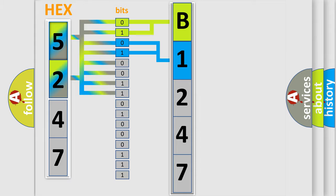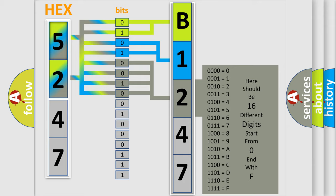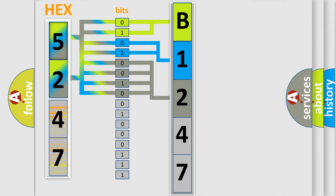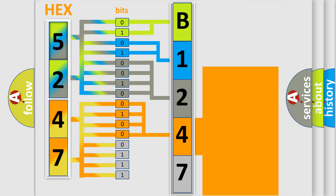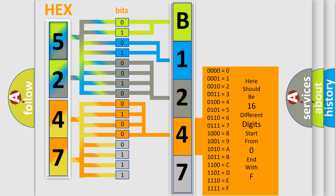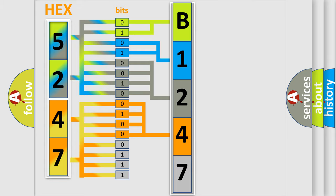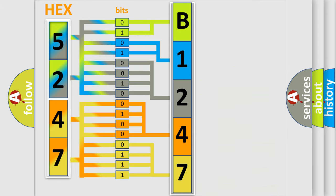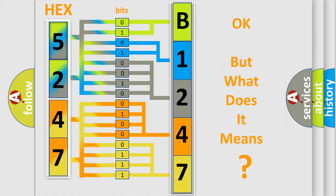The next two bits determine the second character. The last four bits of the first byte define the third character of the code. The second byte is composed of a combination of eight bits. The first four bits determine the fourth character, and the combination of the last four bits defines the fifth character. A single byte conceals 256 possible combinations. We now know in what way the diagnostic tool translates the received information into a more comprehensible format.